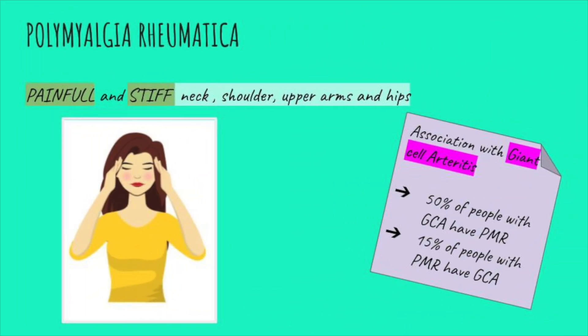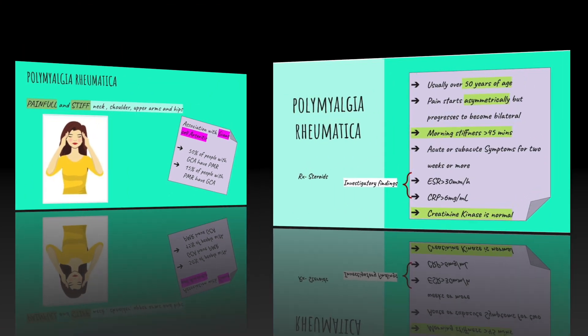Coming on to polymyalgia rheumatica, it typically presents as painful and stiff muscles of the neck, shoulder, upper arms, and hip girdle, with 15% of such patients having giant cell arteritis. It is generally present in people over 50 years of age and usually found in women predisposed to autoantibody diseases. The stiffness of muscles is more pronounced in the morning, lasting for more than 45 minutes. There may also be flu-like features at onset over the course of one or two weeks. Raised inflammatory markers are characteristic, showing both ESR and CRP raised, with CRP being more sensitive.